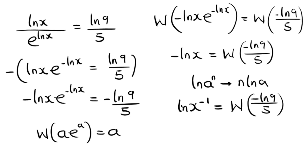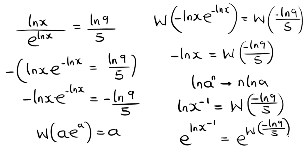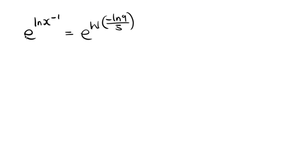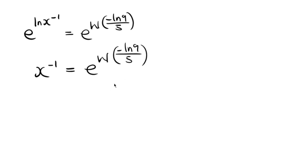To remove the natural log, I take the base exponential of both sides. On the left, e^(ln(x^(−1))) simplifies to x^(−1), since the exponential and natural log cancel. On the right we have e^(W(−ln(9)/5)). So x^(−1) = e^(W(−ln(9)/5)).